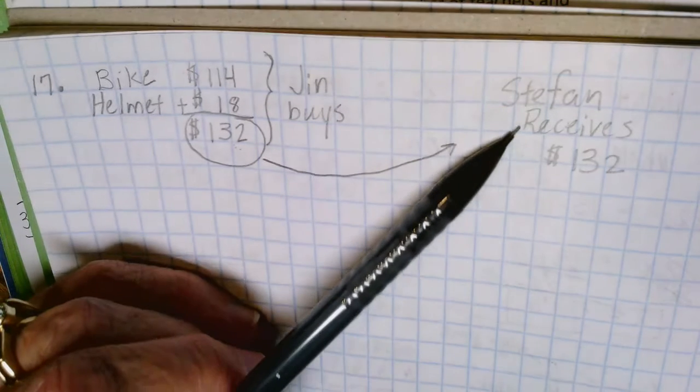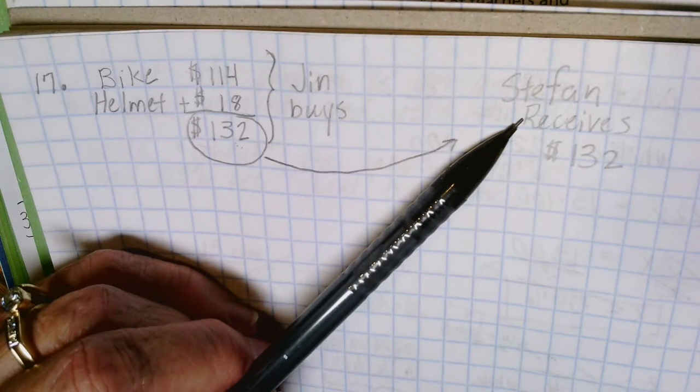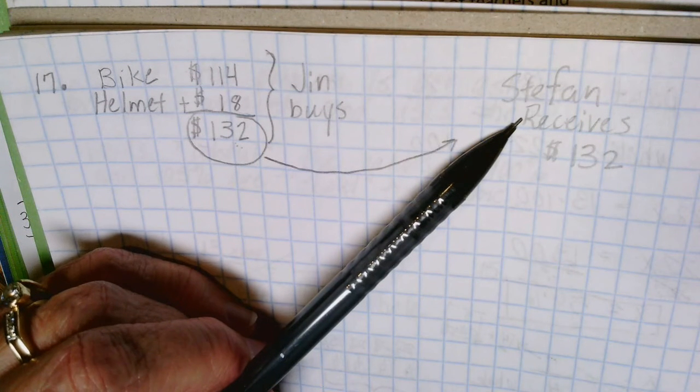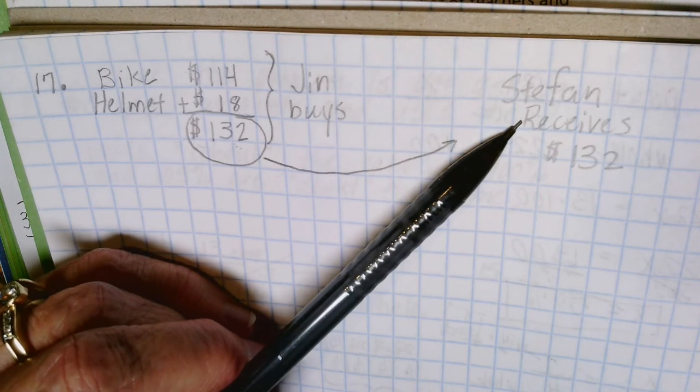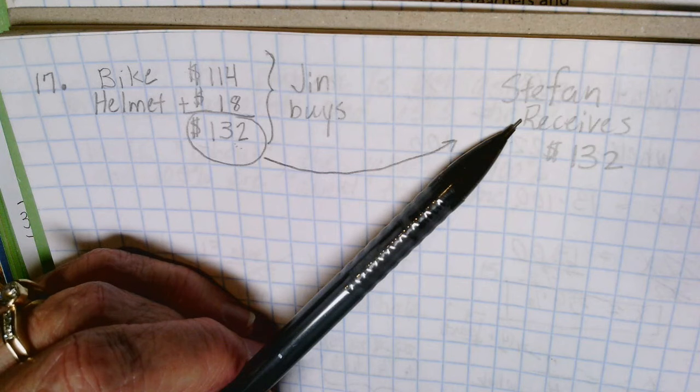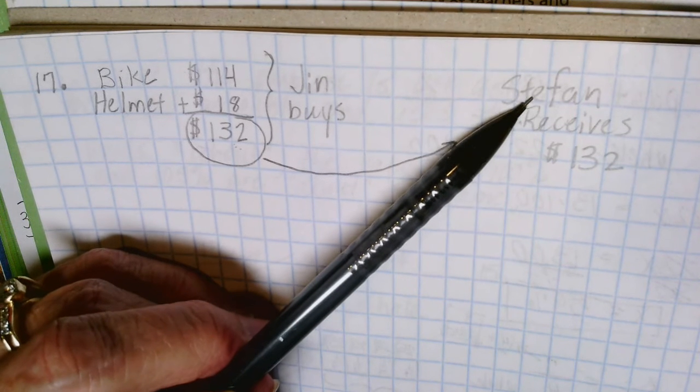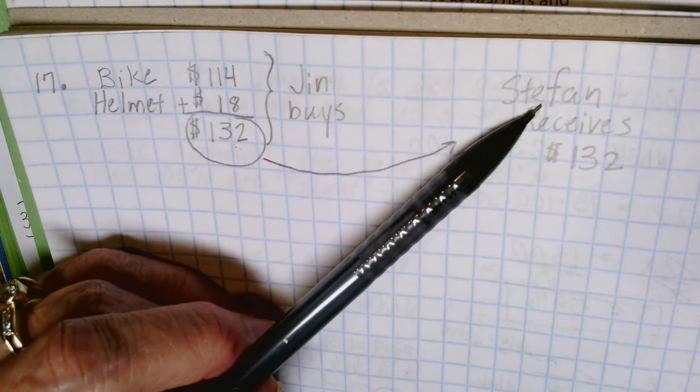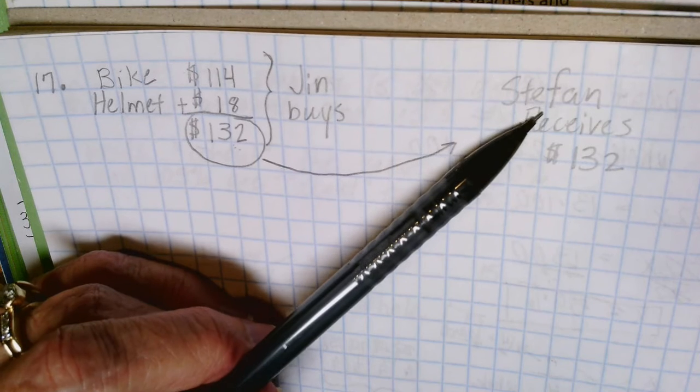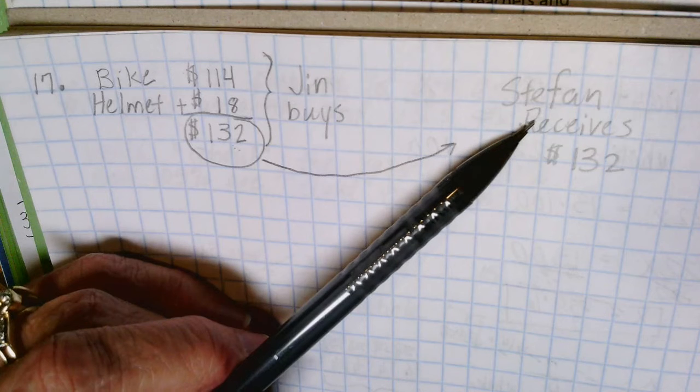I don't know what Stefan did when he had the bike—maybe he repainted it, maybe he added a bell and a basket, put new tires on it—but Stefan was able to sell that bike for more than what he paid for it.